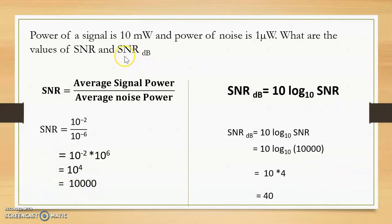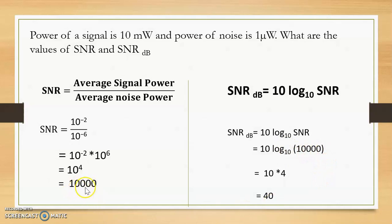Next, find SNR in decibels using SNR_dB = 10 log(SNR). Substituting SNR = 10,000: 10 log(10,000) = 10 × 4 = 40 dB. So the signal-to-noise ratio is 10,000 and SNR in decibels is 40 dB.